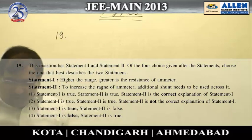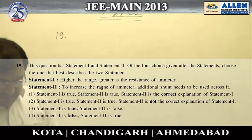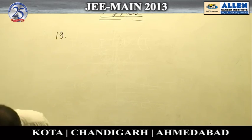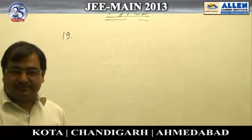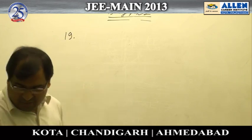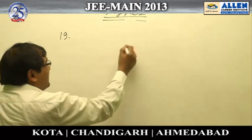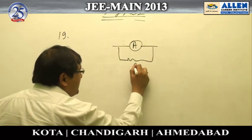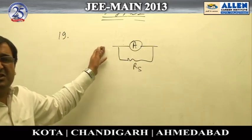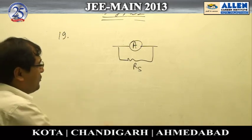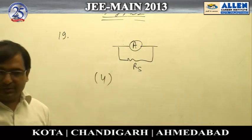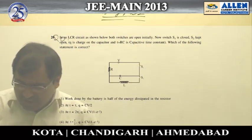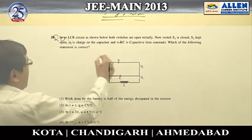Question number 19: the first statement says 'higher the range, greater the resistance of a meter' — that statement itself is wrong. When you need to increase the range of a meter, you join a shunt in parallel, which actually decreases the resistance. So statement one is false, and the correct option is 4.